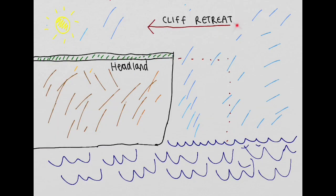Overall, the cliff has been in retreat. The dotted red line marks the previous location of the headland, but this has been lost through the erosive processes just described to form a new location for the headland.